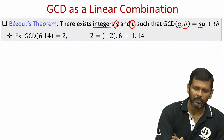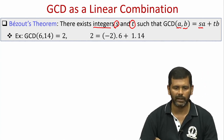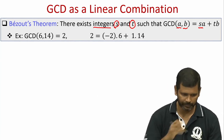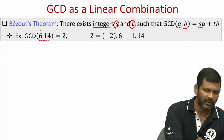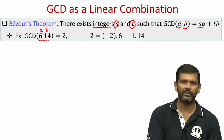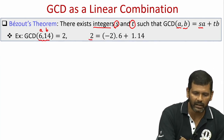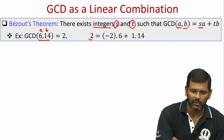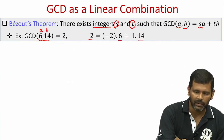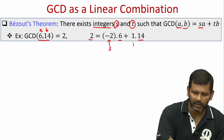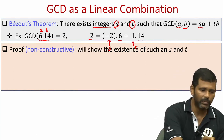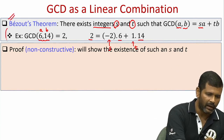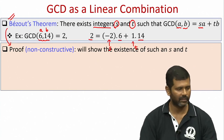When I say integer combiners S and T, they need not be positive — they can be negative as well. The only condition is that they are integers. For instance, if A and B are 6 and 14 respectively, their GCD is 2, and we can write 2 as a linear combination of 6 and 14 where the linear combiners S and T are minus 2 and 1 respectively. That is Bezout's theorem and we will prove it; the proof is slightly involved.